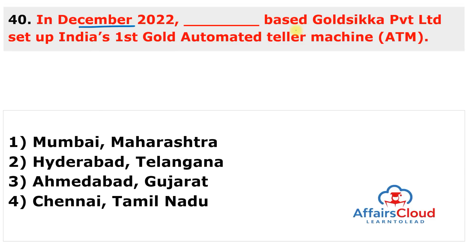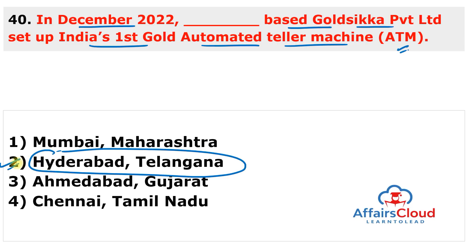Question 40: Which city-based company set up India's first gold ATM in December 2022? The answer is Hyderabad, Telangana — Gold Sikha Private Limited. The gold ATM started operations at Ragupati Chambers in Hyderabad. Telangana Women Commission Chairperson inaugurated the gold ATM. It supplies gold in denominations ranging from 0.5 grams to a maximum of 100 grams, provides a certificate of purity and weight, and is available 24 hours.